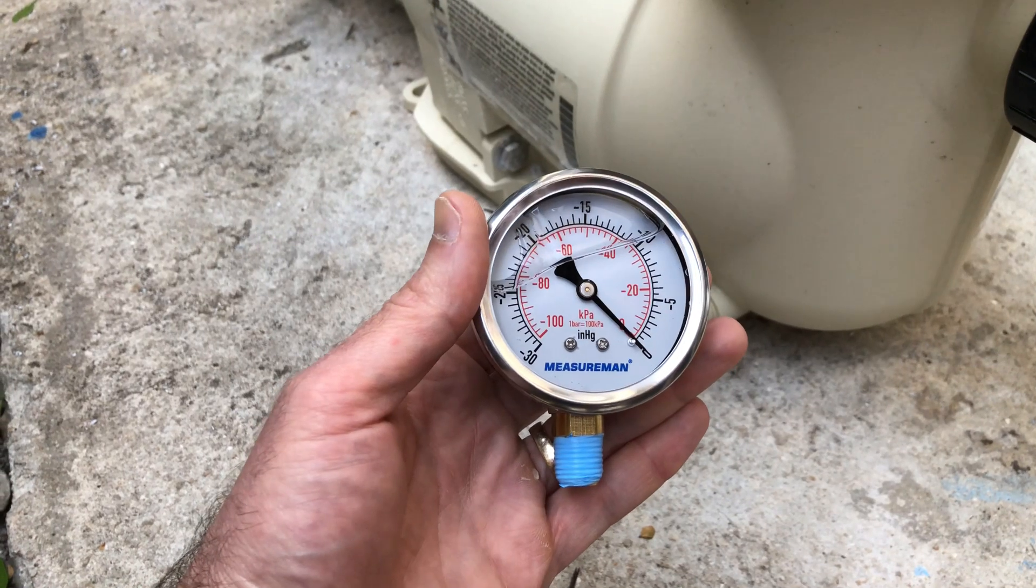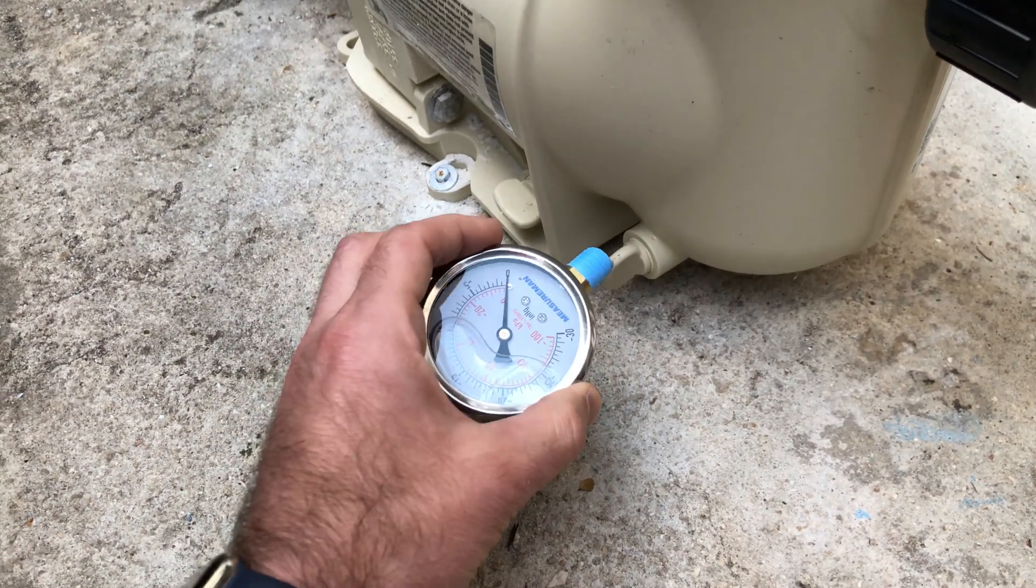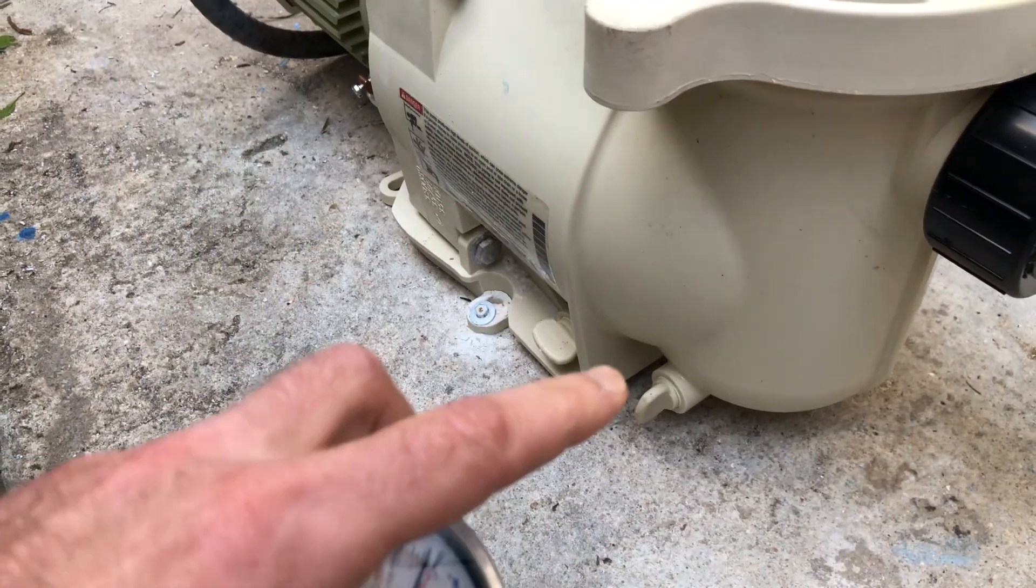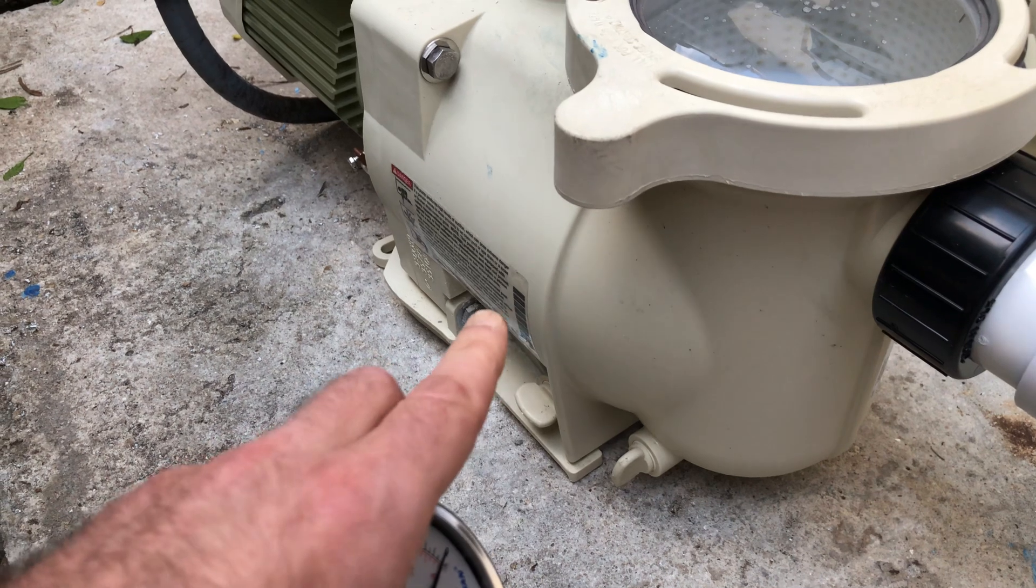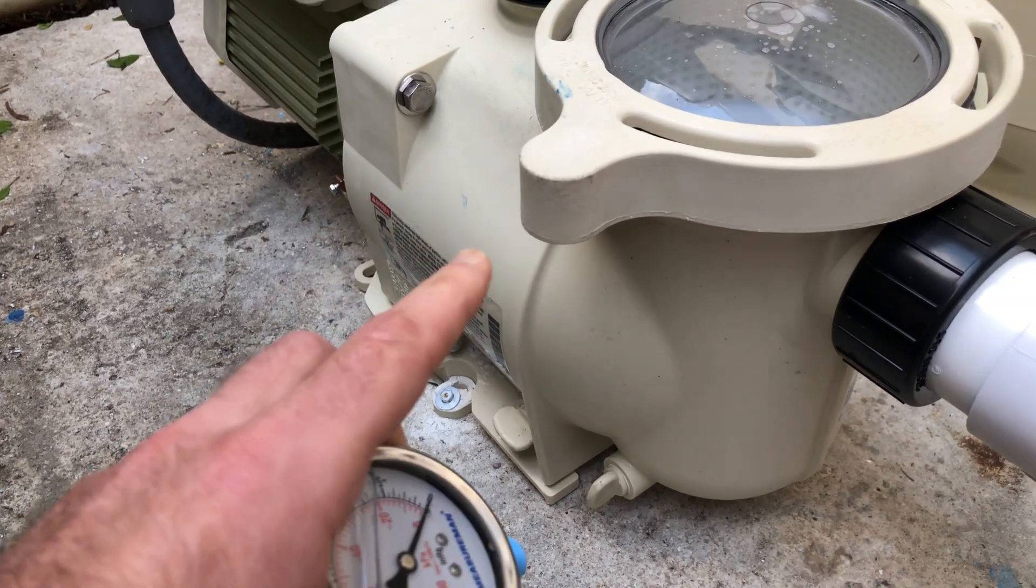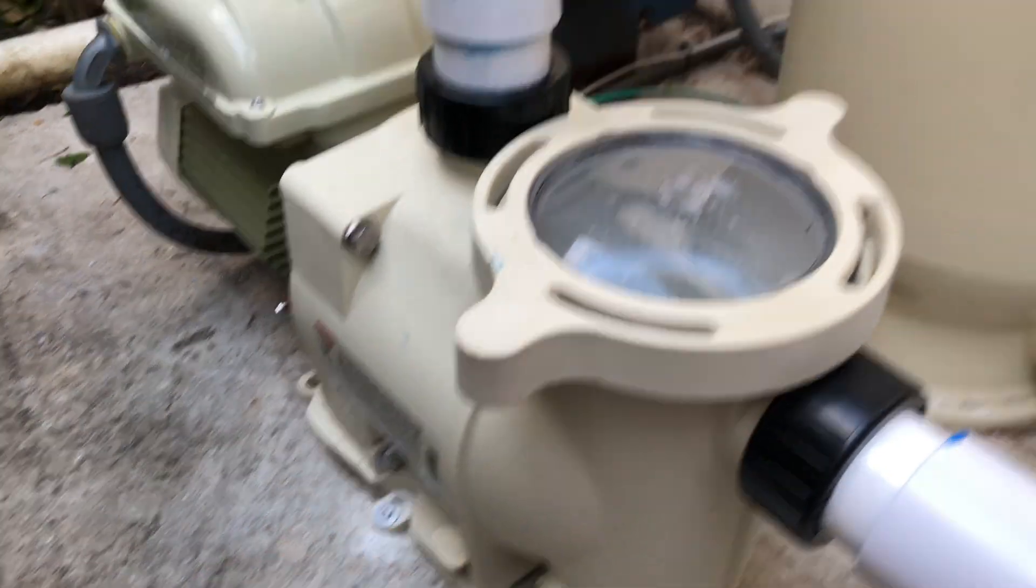So I'm going to go ahead and screw this Measure Man vacuum gauge into the suction side of the pool pump here, and then using the power of math, I'm going to be able to figure out my total dynamic head, and then I'm going to show you how to use the Pentair performance chart to figure out the gallons per minute through the system depending on the RPMs that you have it set to, crossed with your total dynamic head in the system.